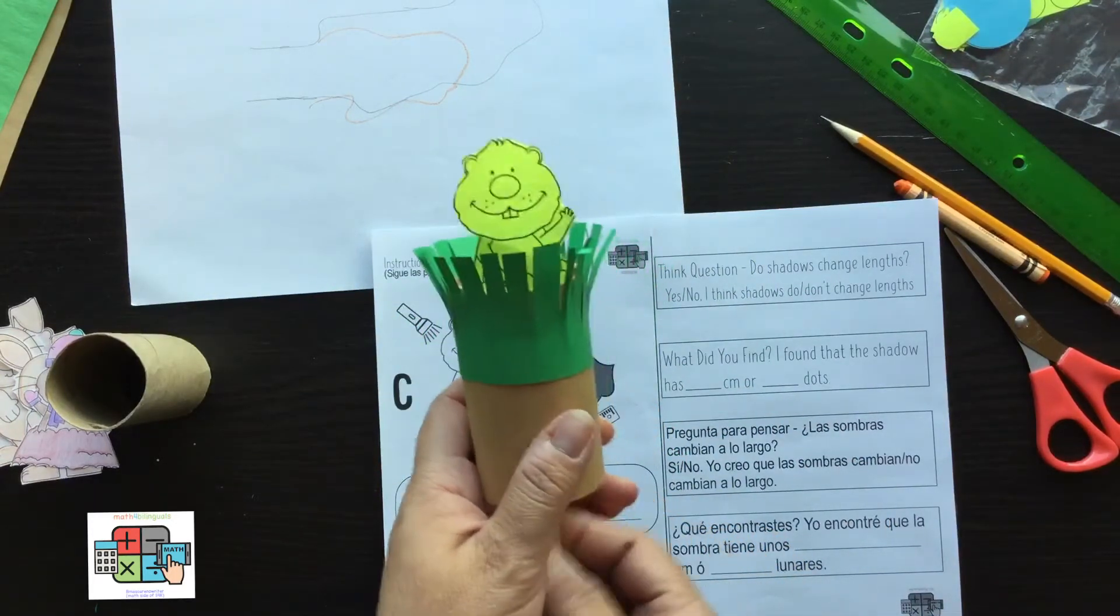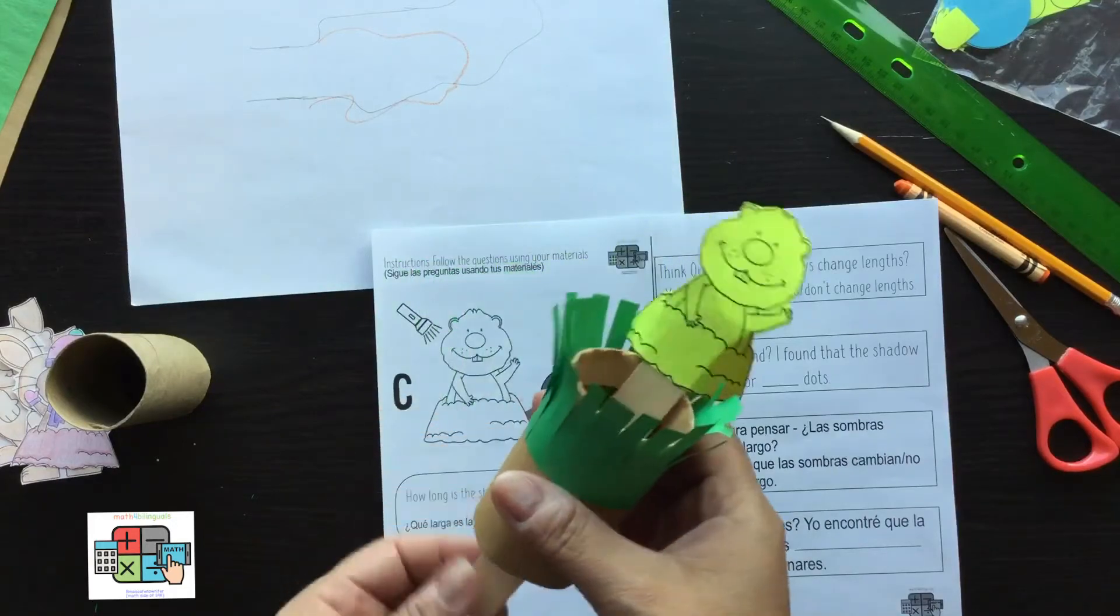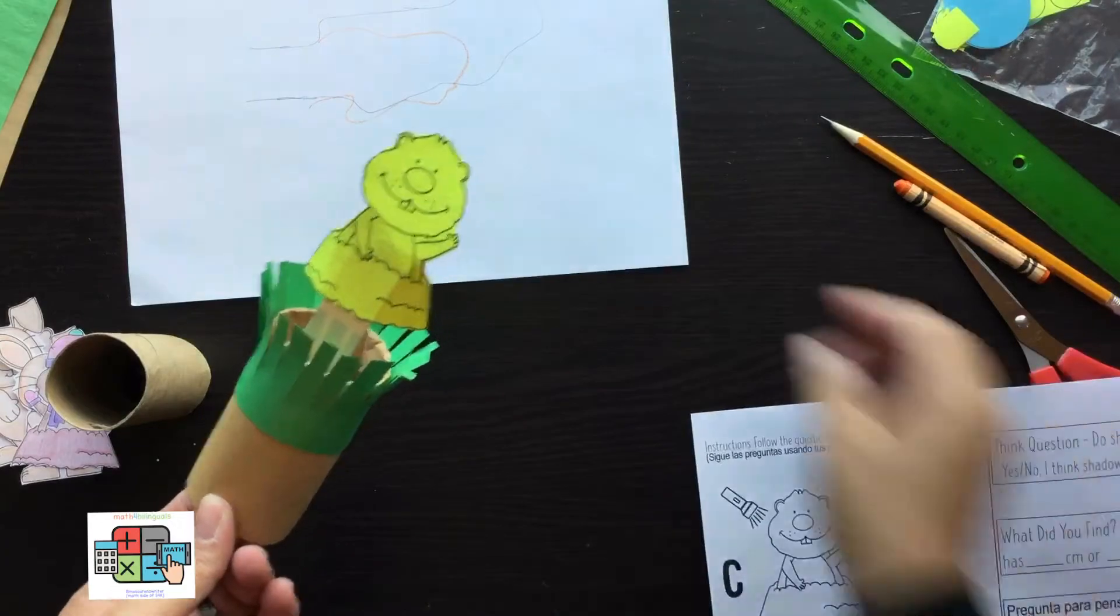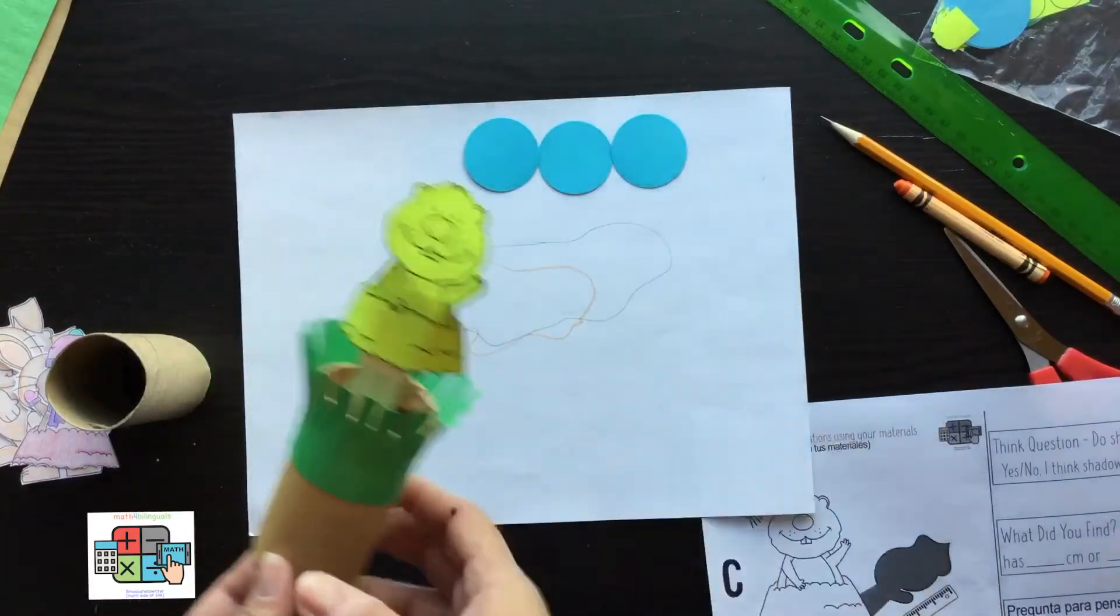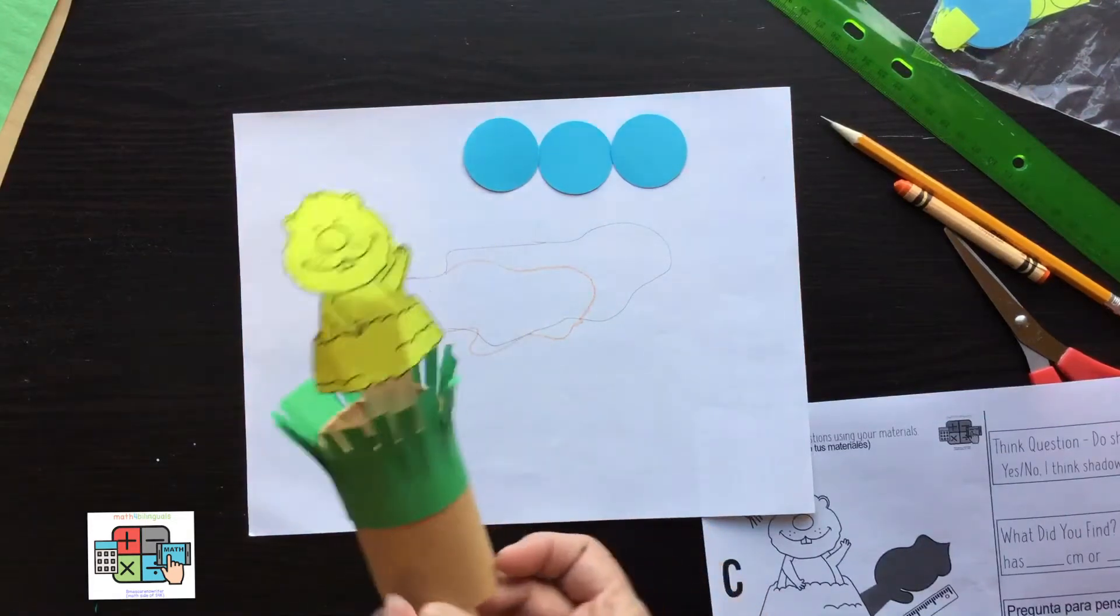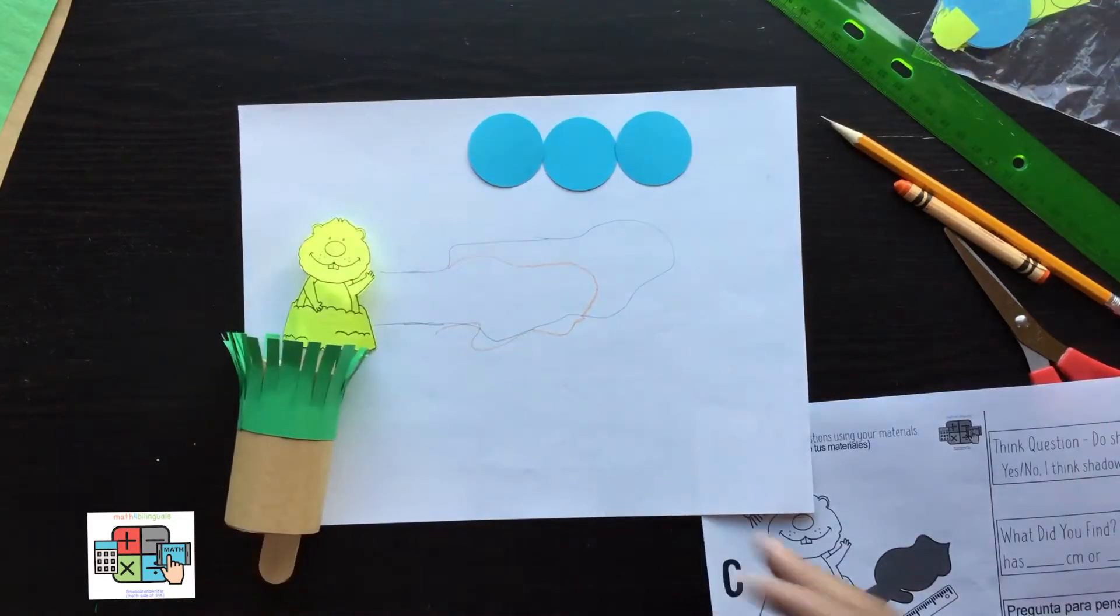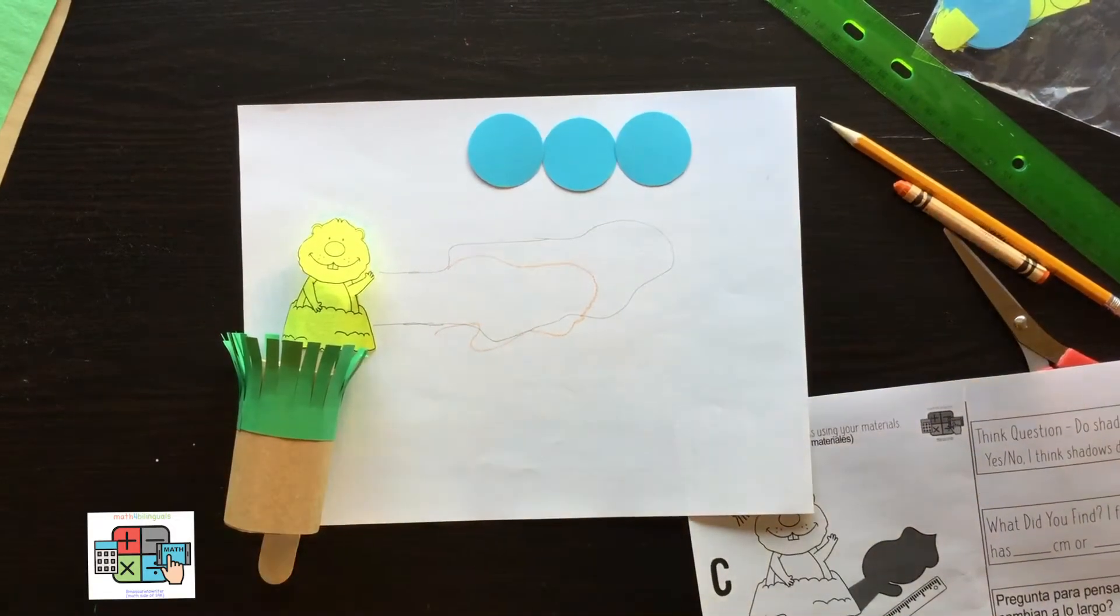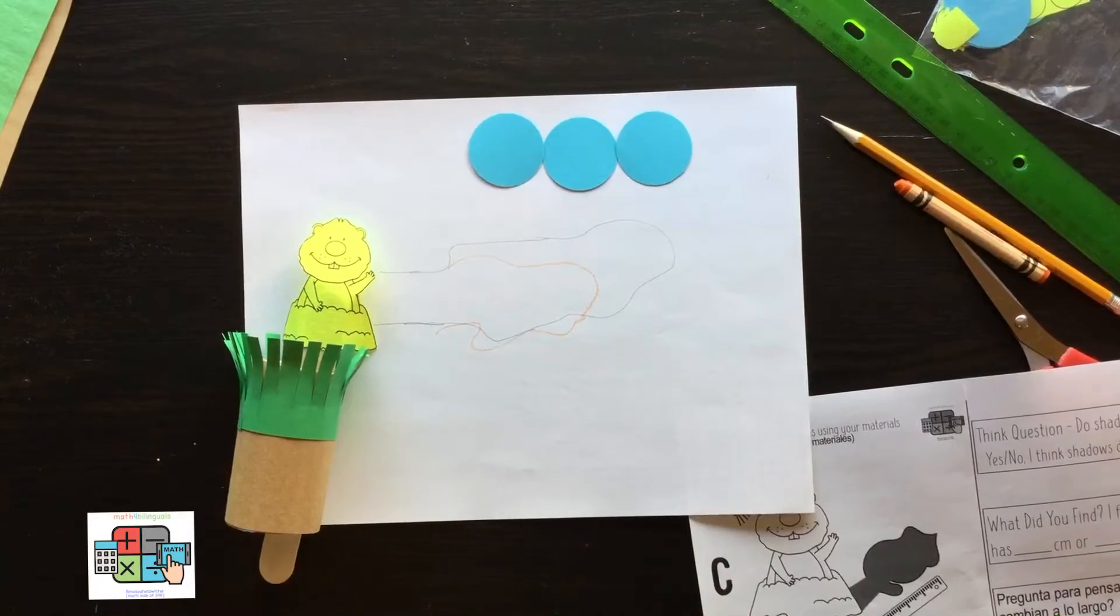Then you're going to use your groundhog template coming out from its little burrow like this, and use a white piece of paper. Let me show you how to create the shadow. I have a flashlight, and I'm just going to make it a little bit darker so you can see what those shadows look like. This is the fun part because you can create shadows with the light source.